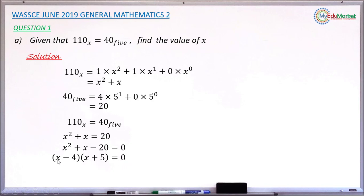Either of these two brackets must be 0 for us to get 0 as the product. So if the first bracket is 0, x minus 4 equals 0, it implies that x will be 4. And if the second bracket, x plus 5, equals 0,